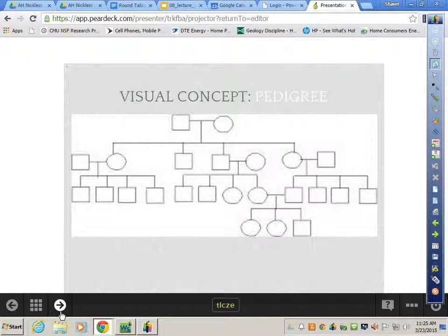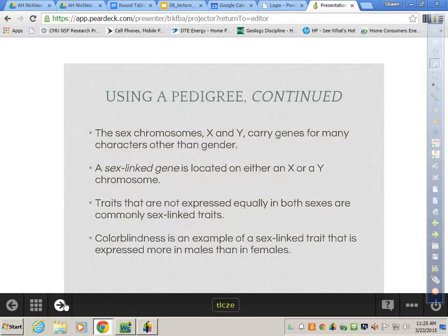Now we're going to talk about sex chromosomes, which are different than autosomes. So far, all we've talked about is autosomes. A sex-linked gene is located on either an X or a Y chromosome, and traits that are not expressed equally in both sexes are commonly what are called sex-linked traits. Color-blindness is an example of a sex-linked trait that is expressed more in males than females. How many of you know a color-blind male? Raise your hand. How many of you know a color-blind girl? That's rare. She's rare. I'll show you why. They can be, but it's extremely rare.